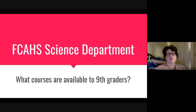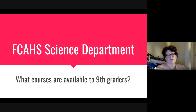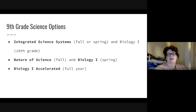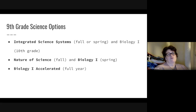Tonight we don't have a whole lot of time, but we would like to go over some of the courses available to ninth graders. For your ninth grade science options, you have Integrated Science Systems, taken either in the fall or spring semester, and then Biology 1, which is taken in 10th grade. You also have Nature of Science, which is a fall class with Biology 1 in the spring, and then Biology 1 Accelerated, which is a full year class.